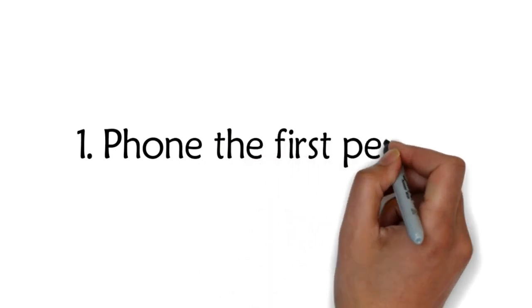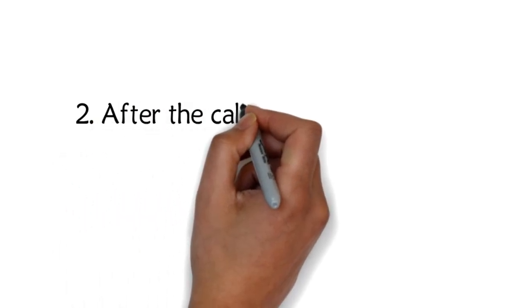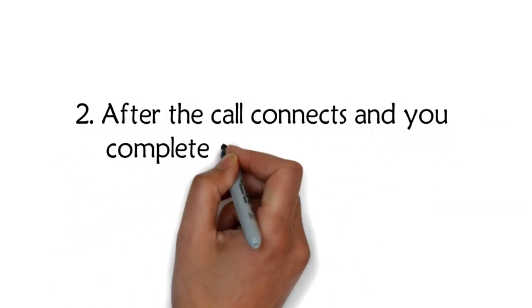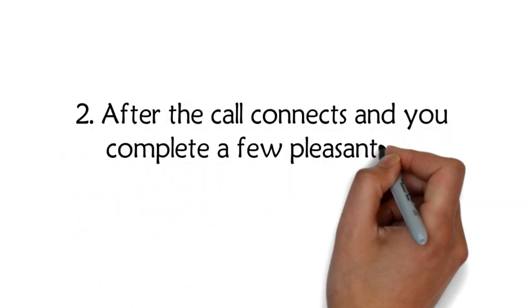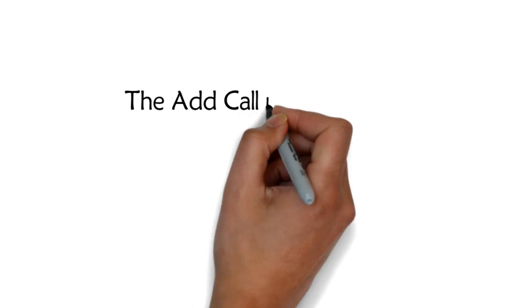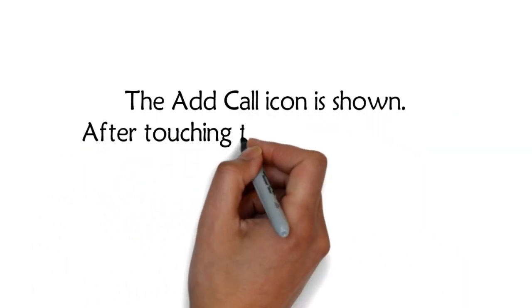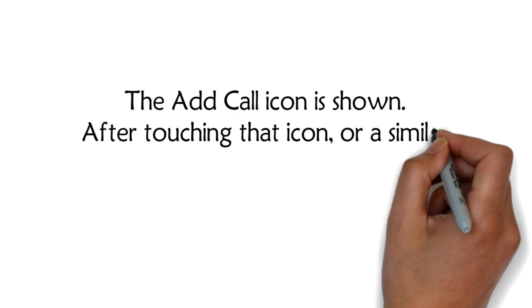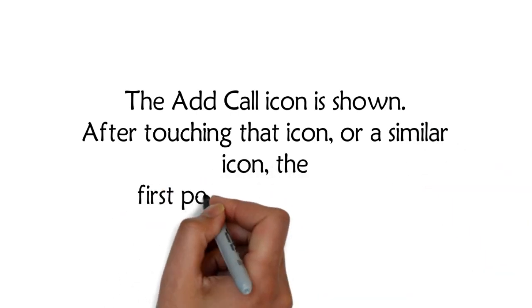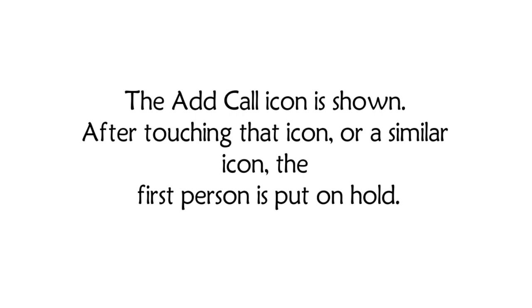Step 1: Phone the first person. After the call connects and you complete a few pleasantries, touch the add call icon. After touching that icon, or a similar icon, the first person is put on hold.